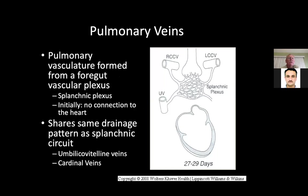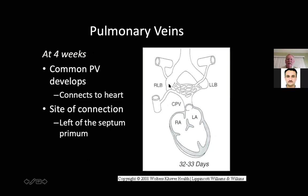The pulmonary vasculature forms from a foregut vascular plexus — a splanchnic plexus — and initially there's no connection to the heart. That's why you can have total anomalous pulmonary venous return: if this splanchnic plexus doesn't fuse into the left atrium, you get a TAPVR. At four weeks, the common pulmonary veins develop and connect to the heart. Sometimes you don't have individual pulmonary veins draining into the left atrium — like a supracardiac TAPVR where you have a single drainage.